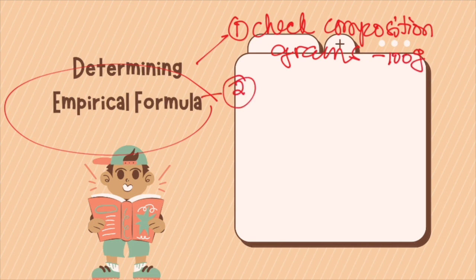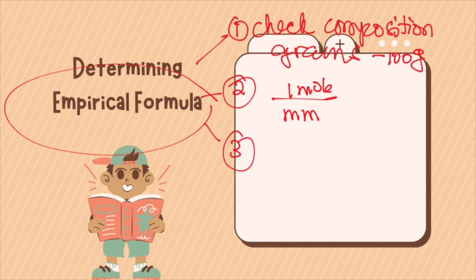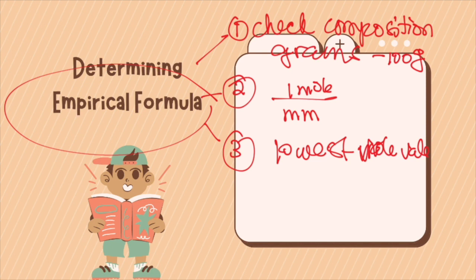The next step is to convert the amount of each element from grams to moles by using the molar mass values from the periodic table, using the conversion factor 1 mole over the molar mass of your substance. The third step is to divide each of the mole values by the lowest mole value of all the elements to get a whole number mole ratio. The empirical formula subscripts must be the lowest whole number ratio between the elements.